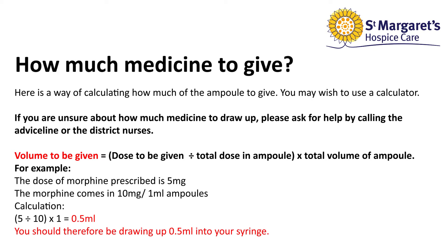This calculation will give you the volume, i.e. the amount of medication to give in millilitres, so that you know how much to draw into your syringe. The calculation is as follows: the volume to be given is equal to the dose of the medicine you wish to give, divided by the total dose of the medicine in the ampoule, multiplied by the total volume of the ampoule. Here is an example.